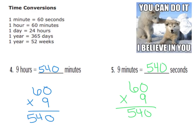Okay, let's check our answers together. We can see that we have nine hours, and they wanted us to change it to minutes. Looking at my time conversions, one hour is 60 minutes, so I had to multiply nine times 60, which gave me 540 minutes. Now looking at number five, I have nine minutes and they wanted me to change it to seconds. One minute is 60 seconds, so I multiply nine times 60, and I got 540 again. So nine minutes equals 540 seconds.